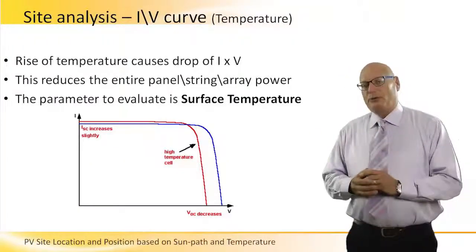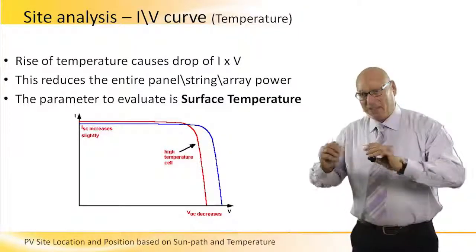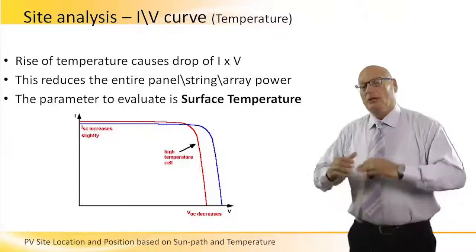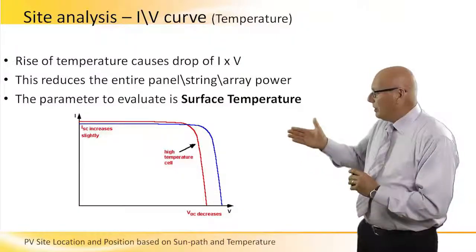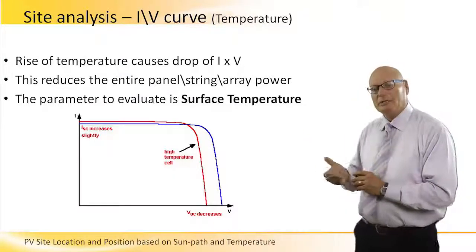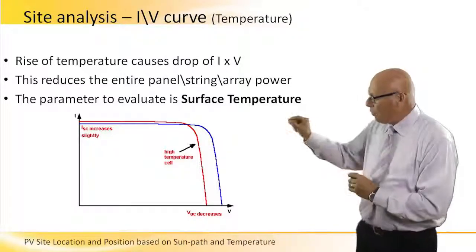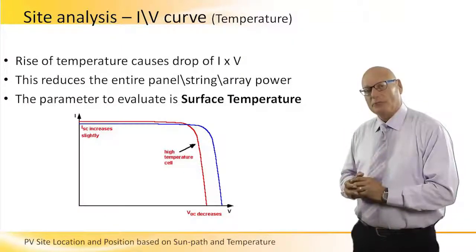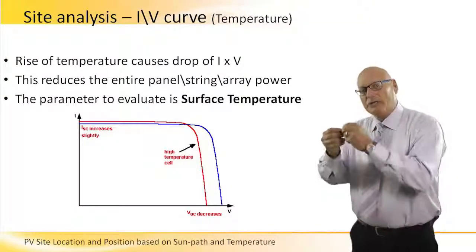We talked about temperatures before — the effect of temperatures. As a statement: the higher the temperature, the less the efficiency. We can see in the graph that the red graph represents a higher temperature cell than the blue graph. It goes left, meaning that the rounded corner, which is I times V — the multiplication of these two values — generates a lower level of power.